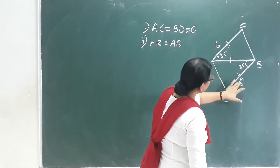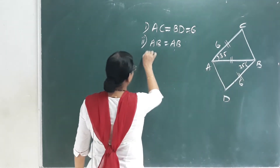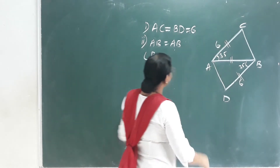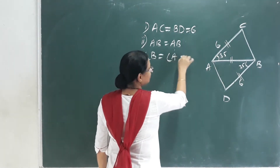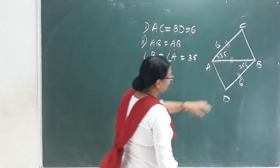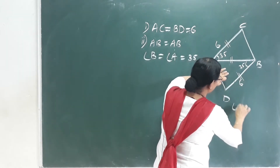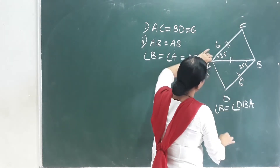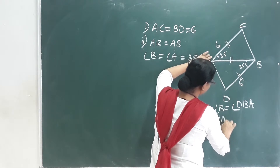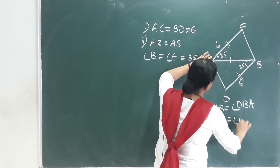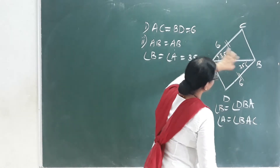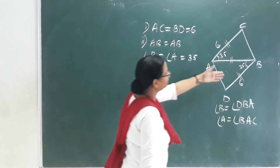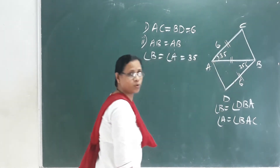Now, this angle — these two sides include angle B. Angle A equals 35°, angle B. Angle DBA equals angle BAC. Now these two are equal. Therefore, this is a parallelogram.